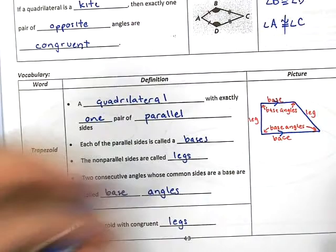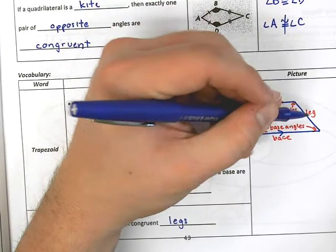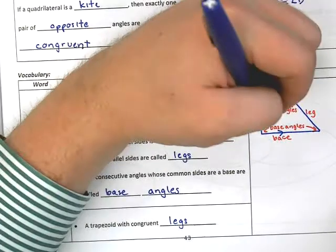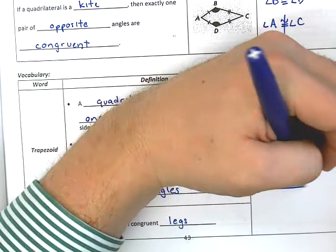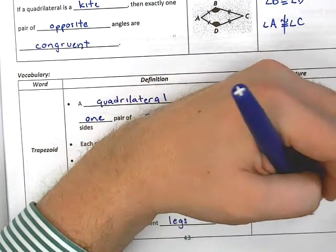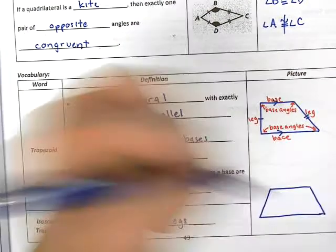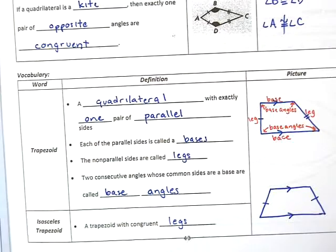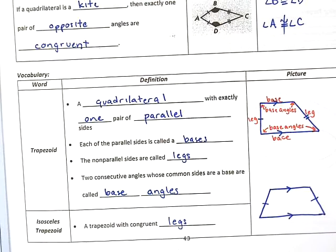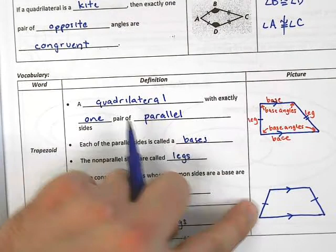So the only difference here, notice when I drew this picture, this leg was not congruent to this leg, maybe something like single and double. Well now if I want an isosceles trapezoid, I draw something like this, and like this, they're still parallel, and now I have to say that the legs are congruent. So there's the difference between a trapezoid and an isosceles trapezoid.